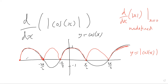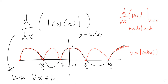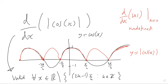Therefore, we can't differentiate at these roots — these repeated roots. So this derivative is only going to be defined for x values not equal to these odd multiples of pi over two. The derivative will be valid for all x in the real numbers, apart from values of x equal to pi over two, three pi over two, and so on — essentially these odd multiples of pi over two, where k is any integer.